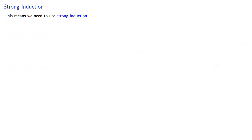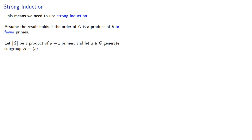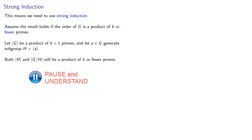This means we need to use strong induction. So let's assume the result holds if the order of g is a product of k or fewer primes. So let the order of g be a product of k plus one primes, and let A in g generate a subgroup h. Both the order of h and the order of g mod h will be a product of k or fewer primes, so our induction assumption does tell us something about these cases.